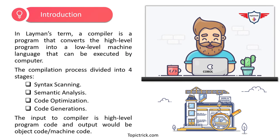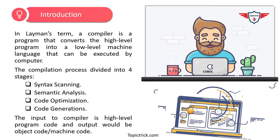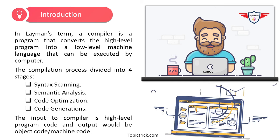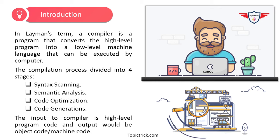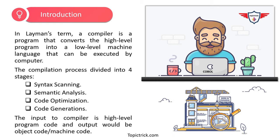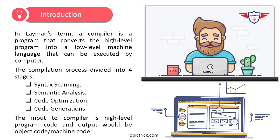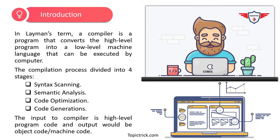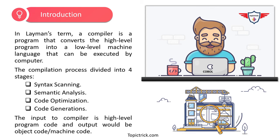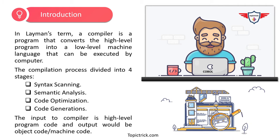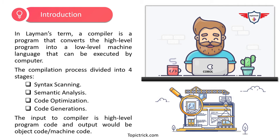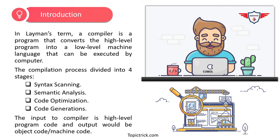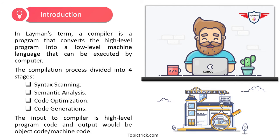The first question is: what is a compiler? In layman's terms, a compiler is a program that converts a high-level program into a low-level machine language that can be understood and executed by a computer. Each and every language has its own compiler. The compilation process is actually divided into four different stages or categories.